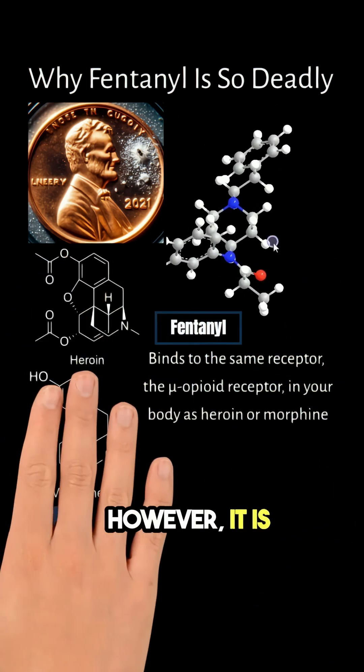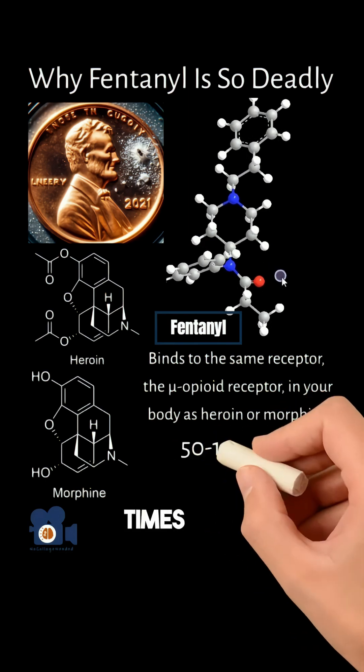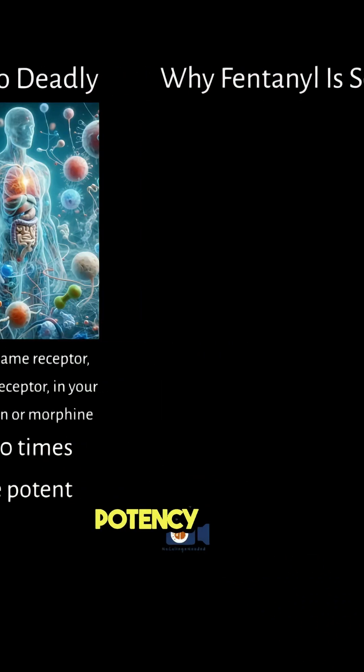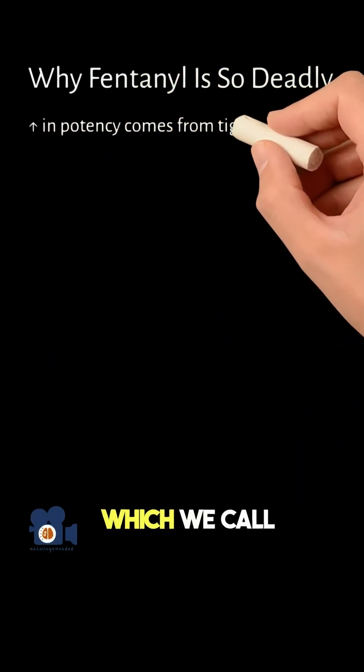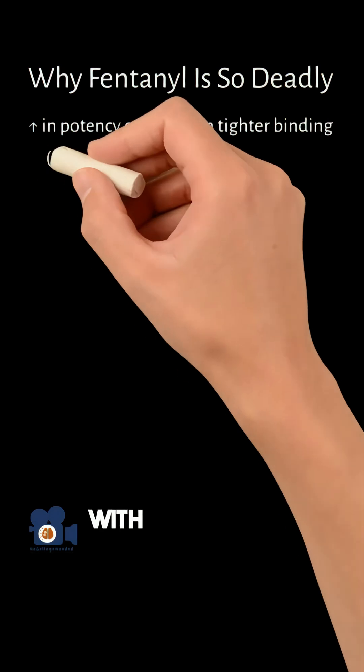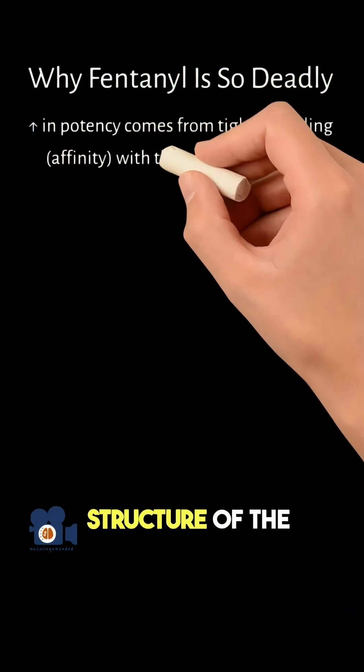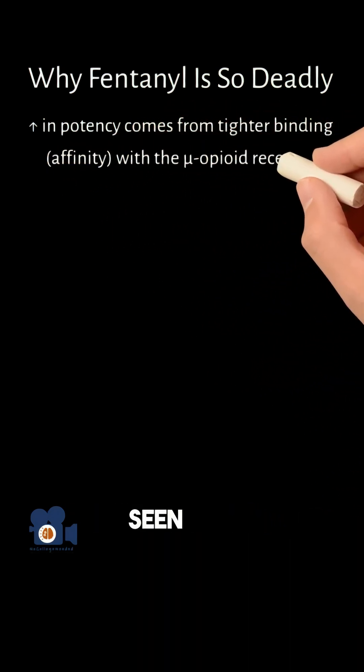However, it is 50 to 100 times more potent. This increase in potency comes from tighter binding, which we call affinity, with the crystal structure of the mu-receptor seen here.